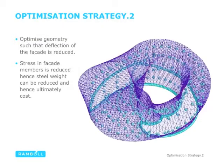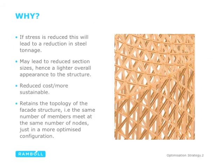The second optimization strategy is to optimize the geometry of the structure such that the deflection of the facade is reduced. By reducing deflection we can reduce steel weight and hence ultimately reduce cost. If stress is reduced we can reduce steel tonnage, which may lead to reduced section sizes, a lighter overall appearance, reduced cost, a more sustainable structure — and importantly the topology of the facade is retained.